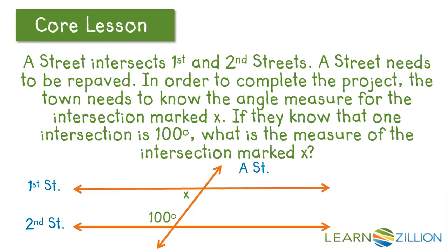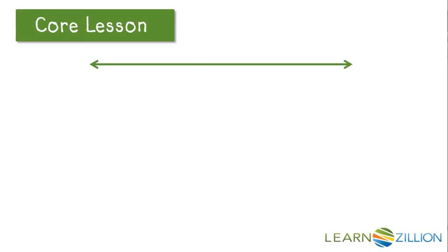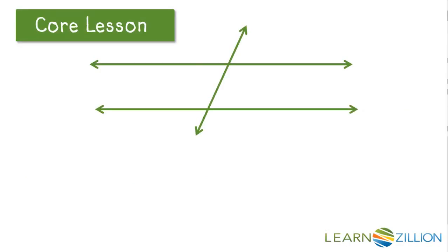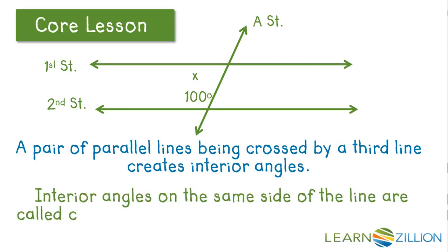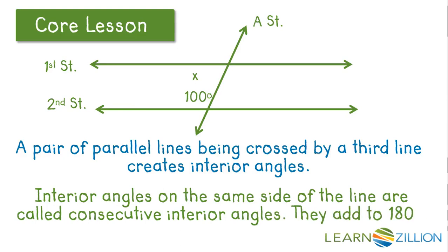In order to find angle X, we need to use consecutive interior angles. Looking at our diagram, we have two parallel lines intersected by a third line — First Street, Second Street, and A Street. A pair of parallel lines crossed by a third line creates interior angles between the two lines. So angle X and the angle marked 100 degrees are considered interior angles. Interior angles on the same side of the line are called consecutive interior angles, and they add to 180 degrees. Notice that angle X and the angle marked 100 degrees are both on the same side of A Street and are both interior angles.